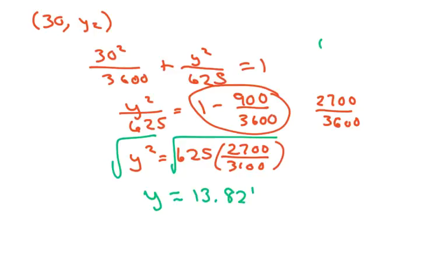Taking the square root gives $y \approx 13.82$ feet. Wait, actually I was looking at the wrong calculation on my paper. The height at 30 feet is approximately 21.65 feet. The 13.82 feet value will be for $x = 50$.